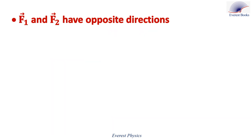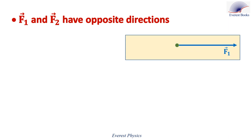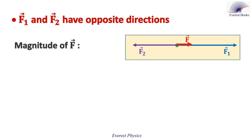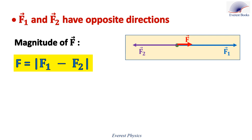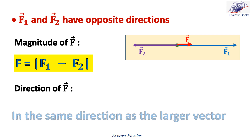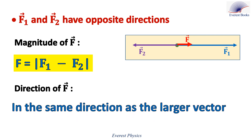Now let's find the resultant of two vectors having opposite directions. Look at the figure. F1 is directed horizontally to the right. F2 is directed horizontally to the left. The magnitude of the resultant vector is the absolute value of the difference in their magnitudes. And the direction of the resultant vector is in the same direction as the larger vector.